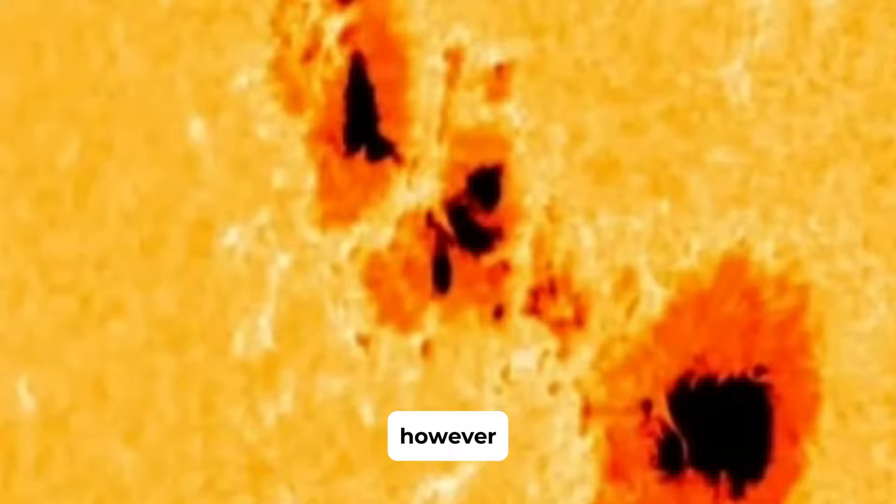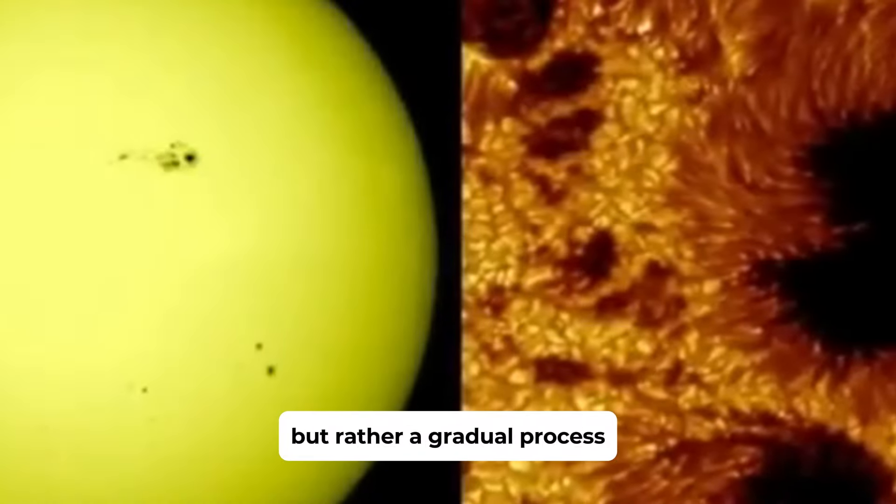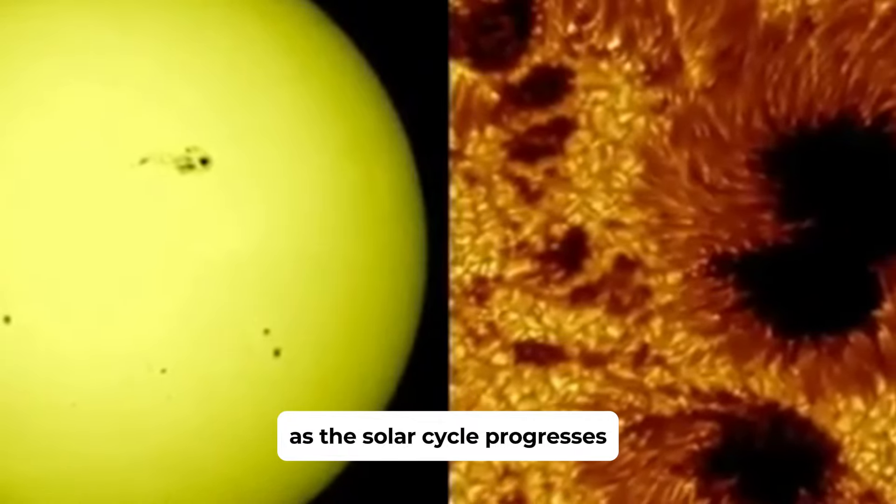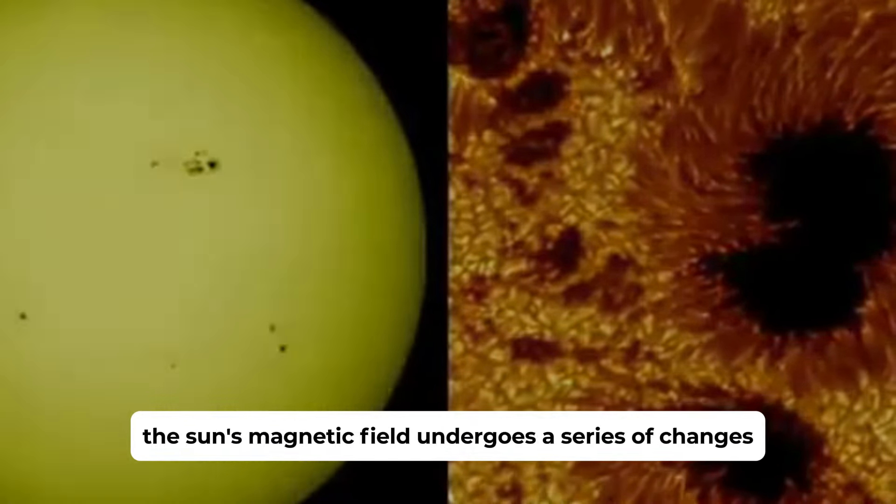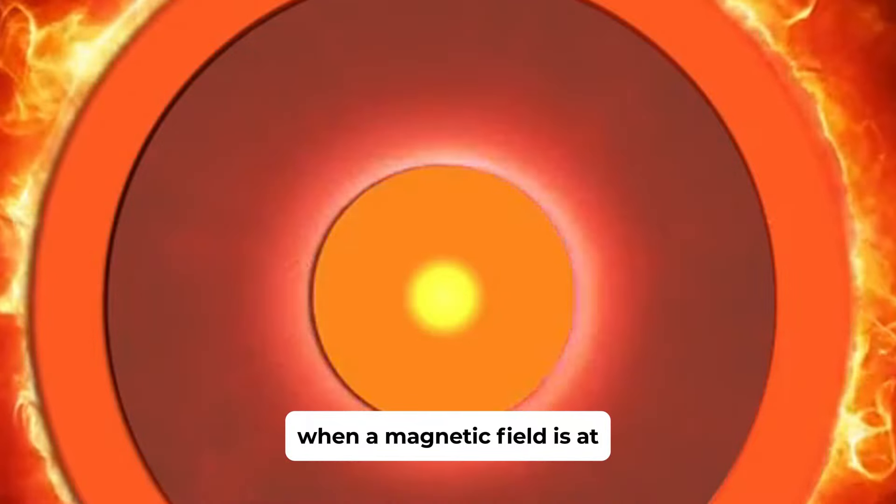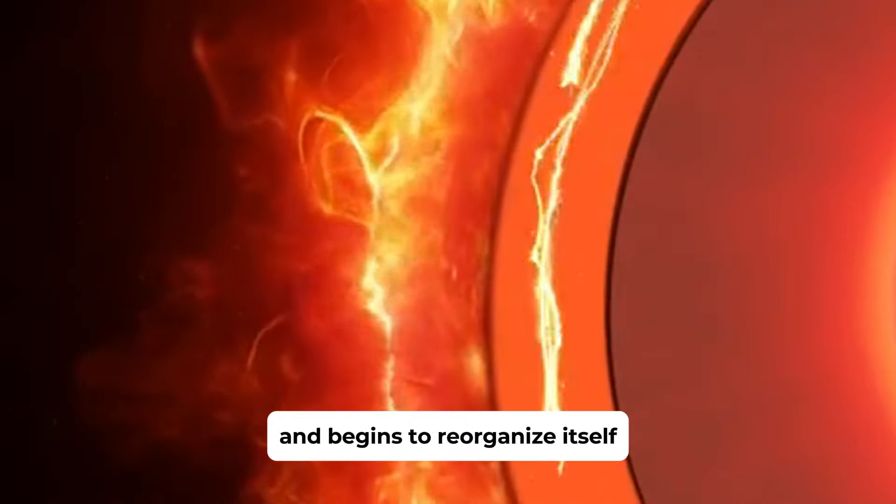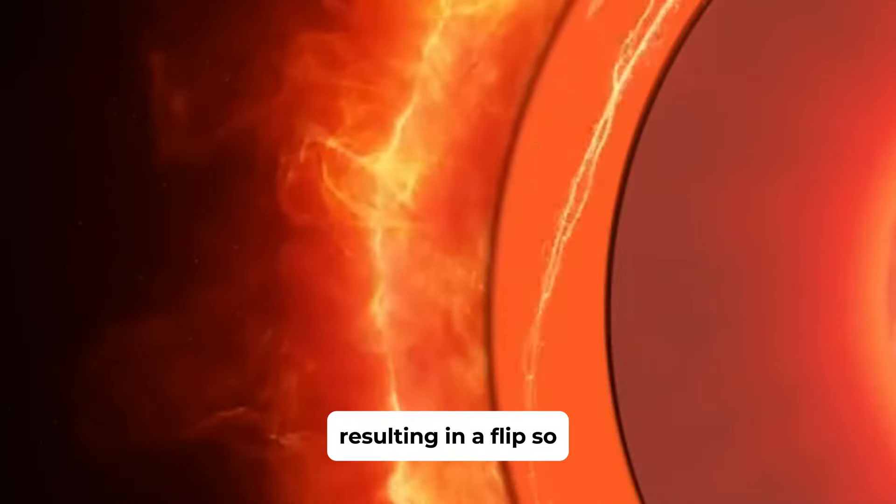However, the Sun's magnetic field reversal is not a sudden flip but rather a gradual process. As the solar cycle progresses, the Sun's magnetic field undergoes a series of changes. When the magnetic field is at its most twisted and tangled state, it reaches a tipping point and begins to reorganize itself, resulting in a flip.